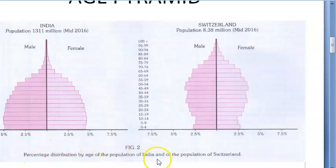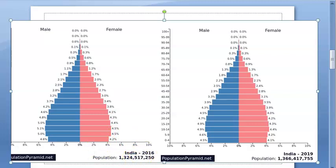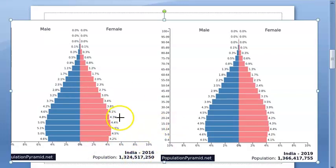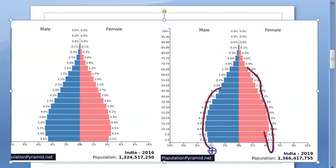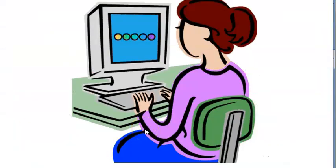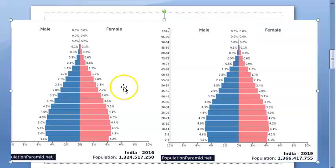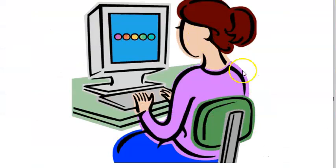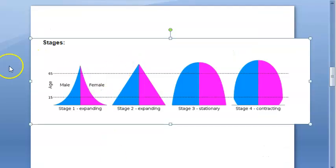Looking at the percentage distribution by age for India and Switzerland — comparing India from 2016 to 2019, the shape has become a little slimmer at the base. For example, 4.6 became 4.2, and 4.5 became 4.1. You can see the number of females being born is becoming fewer — female foeticide is happening — while more males are being born.